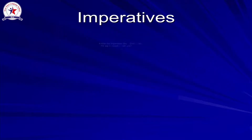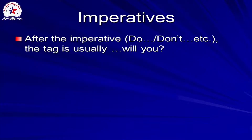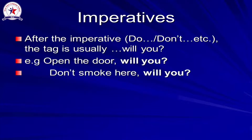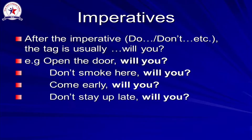When I have an imperative sentence, the question tag should be 'will you.' Imperatives are orders, so when giving someone an order, use 'will you.' Examples: 'Open the door — will you.' 'Don't smoke here — will you.' 'Come early — will you.' 'Don't stay up late — will you.'